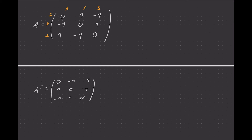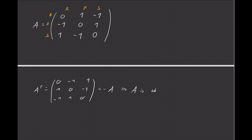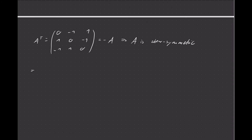Comparing the transpose to A, you will see those entries are not the same but they are inverses of each other — so the transpose is exactly −A. That means A is skew-symmetric, and by definition, that means rock, paper, scissors is a symmetric game.